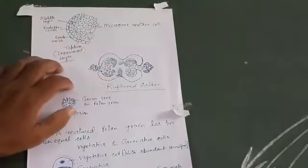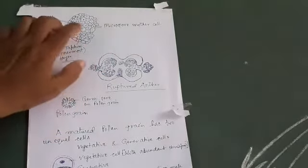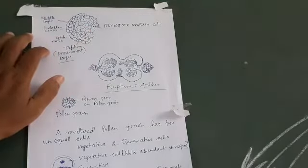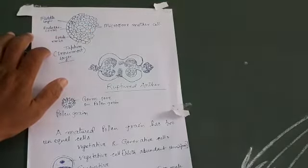known as sporogenous tissue. This tissue has many microspore mother cells, which are diploid, having two sets of chromosomes.